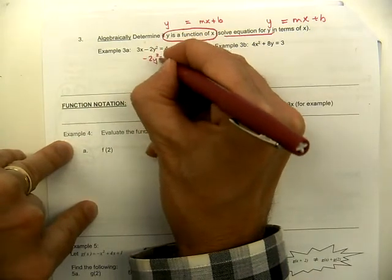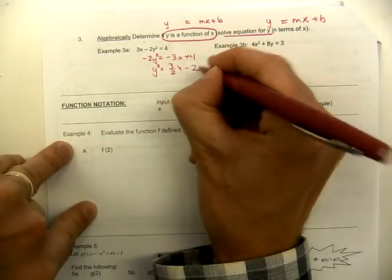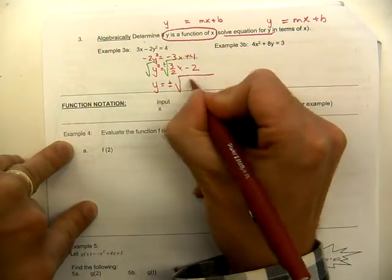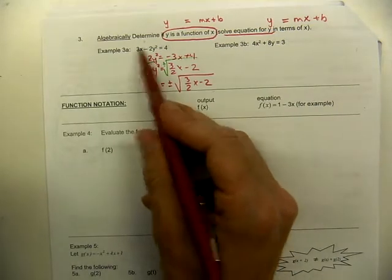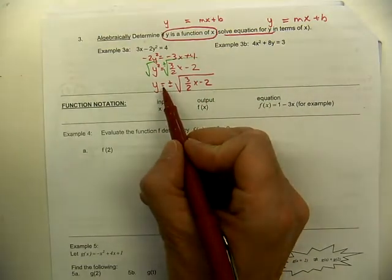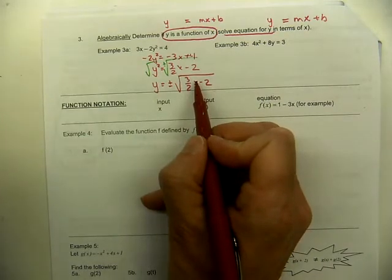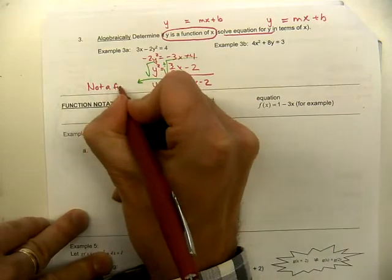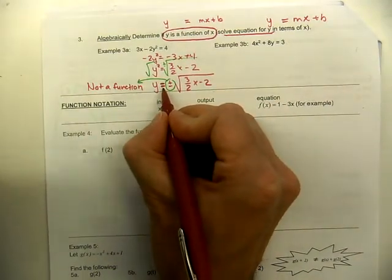Let's solve for y and see what happens. Subtracting 3x from both sides gives negative 2y² equals negative 3x plus 4. Dividing away the negative 2, we have y² equals positive three-halves x minus 2. Lastly, to get rid of the power of 2, we take the square root of both sides — don't forget your plus or minus. So y equals plus or minus the square root of (3/2)x minus 2. Because of the plus or minus, that means I have two answers when I plug in any number. If I have two answers, it's not a function. Not all equations are functions — functions are special kinds of equations.